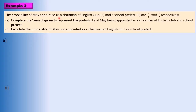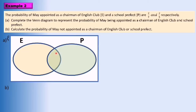Example 2. The probability of event E and event P is 2 over 7 and 2 over 5 respectively. Complete the event diagram to represent the probability of a man being appointed as chairman of the English club and school prefect. First, we need to find the intersection of E and P. The keyword for intersection is multiply, so probability of E intersect P equals probability of event E multiplied by probability of event P, which is 2 over 7 times 2 over 5 equals 4 over 35.